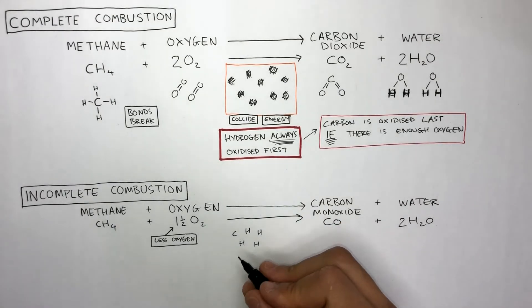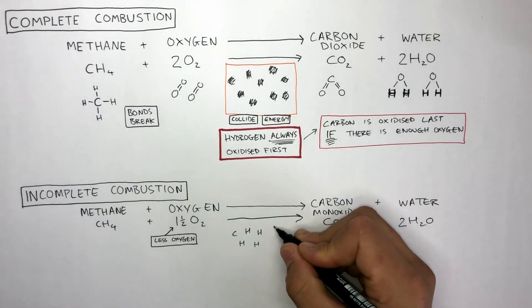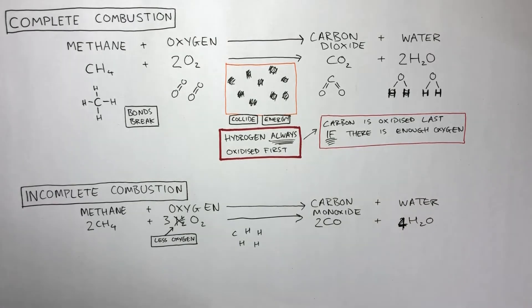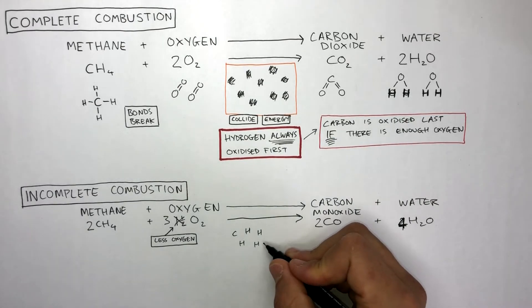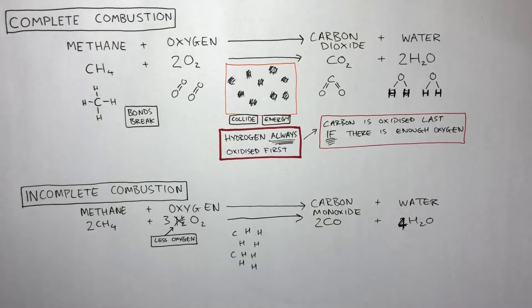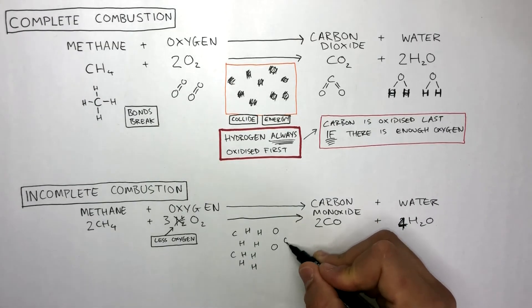Because you can't have half an oxygen atom, I'm going to double the moles so the diagram can work. This means there is a ratio of two carbon atoms and eight hydrogen atoms being oxidized by six oxygen atoms.